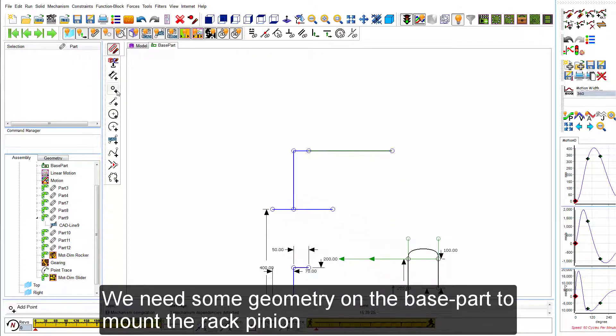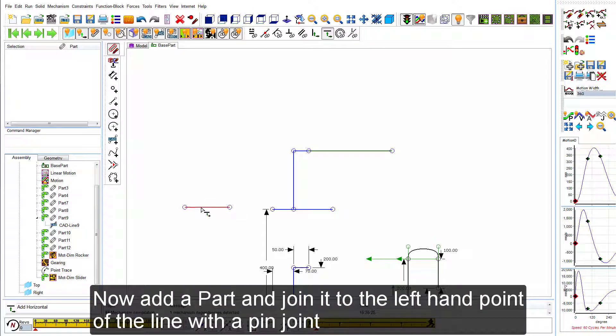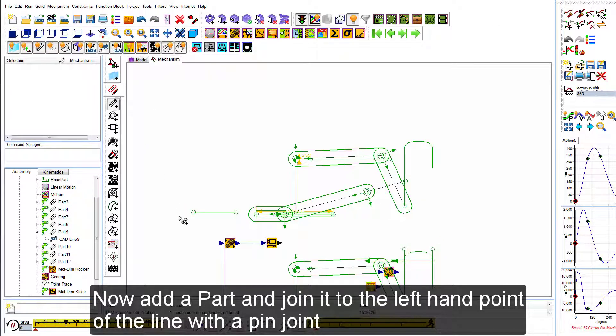We now need some geometry on the base part to mount the rack pinion. So I put a line just to the left of the slide line and now add a part and join it to the left-hand point of the line with a pin joint.